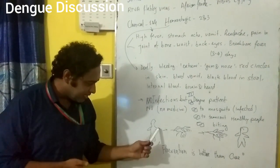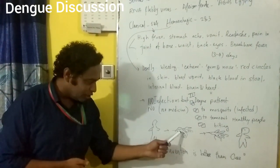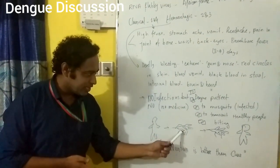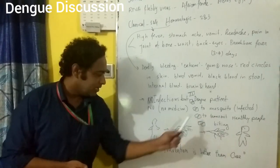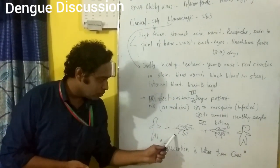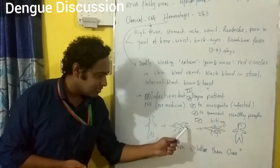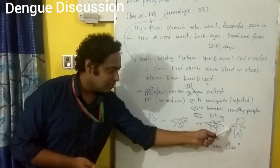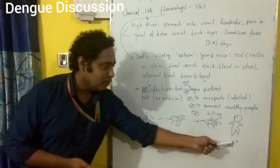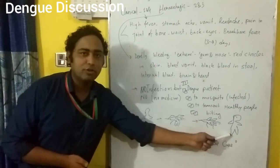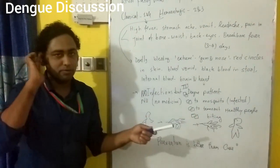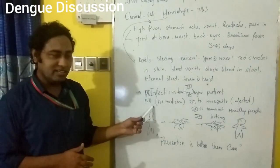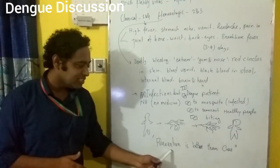When a person has got dengue fever, a normal mosquito could bite him and this mosquito becomes an infected mosquito. This infected mosquito could then bite healthy people, and the healthy person also gets infected by dengue virus and suffers from it. In this way, dengue virus spreads. As there is no medicine, I've written: prevention is better than cure.